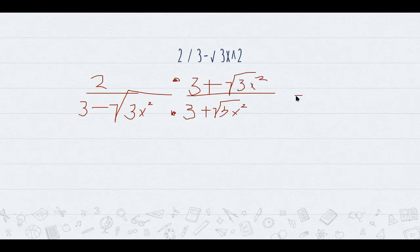And this would give you 9 minus 3x². And the top bit will give you 6 plus 2 radical 3x². But we're not done yet because we can simplify this part. So this would equal to 6 plus 2x radical 3.